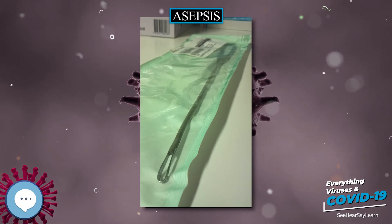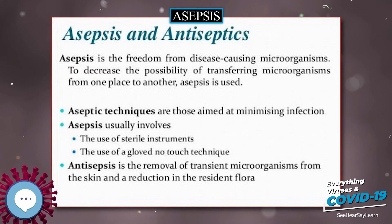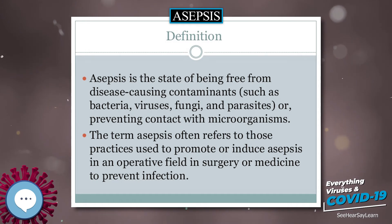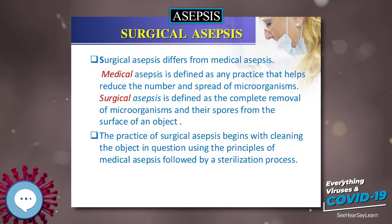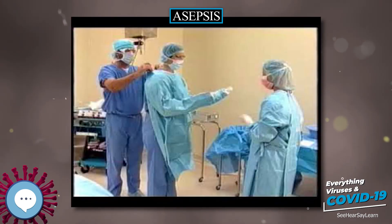Ernst von Bergman introduced the autoclave, a device used for the sterilization of surgical instruments. Asepsis refers to any procedure that is performed under sterile conditions. This includes medical and laboratory techniques, such as bacterial cultures, and can incorporate techniques such as flame sterilization and methods to protect wounds and other susceptible sites from organisms that could cause infection.